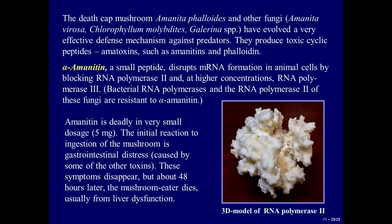The death cap mushroom, Amanita phalloides, and other fungi — Amanita virosa, Chlorophyllum molybdites, and Galerina species — have evolved a very effective defense mechanism against predators. They produce toxic cyclic peptides called amatoxins, such as amanitin and phalloidin. Alpha-amanitin, a small peptide, disrupts mRNA formation in animal cells by blocking RNA polymerase II and, at higher concentrations, RNA polymerase III. Bacterial RNA polymerases and the RNA polymerase II of these fungi are resistant to alpha-amanitin.